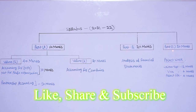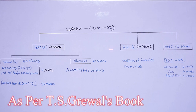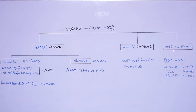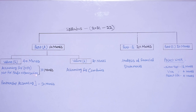Part A weightage is 60 marks, Part B weightage is 20 marks, and Part C weightage is 20 marks. Part A is divided between two volumes: Volume 1 and Volume 2. Volume 1 has two chapters and Volume 2 has one chapter. Volume 1 weightage is 40 marks. Accounting for not-for-profit organizations has a weightage of 10 marks, and partnership accounting has a weightage of 30 marks. Volume 2 weightage is 20 marks, covering accounting for companies.